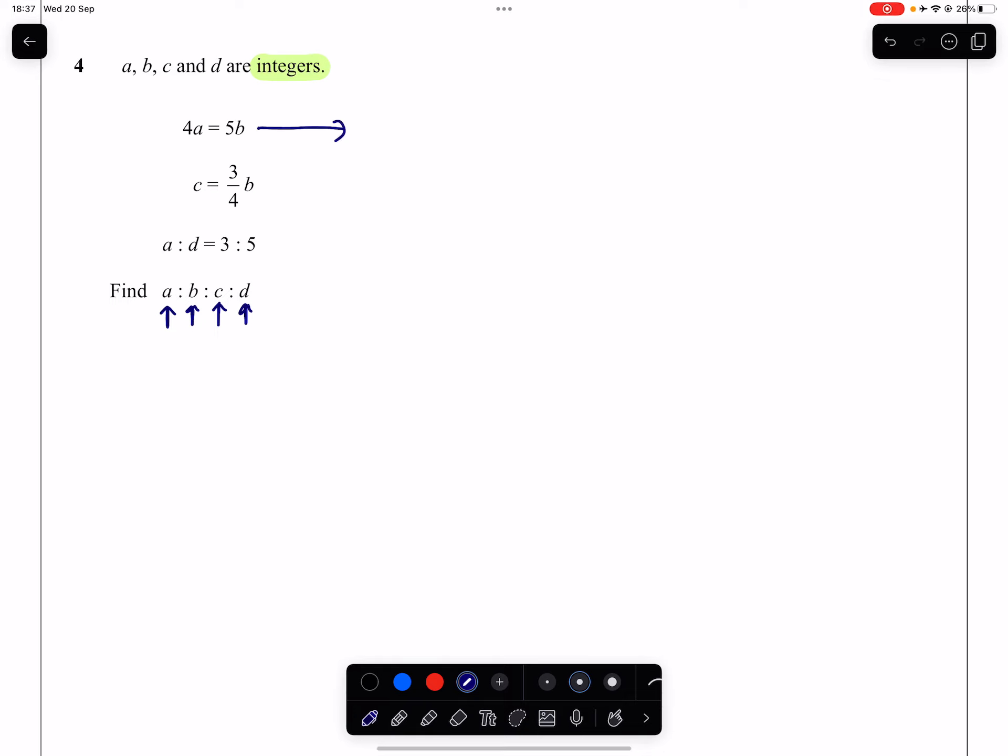So B is going to be, if we divide both sides by five here, B will be four-fifths of A. So that basically means that I have locked up this part in terms of A.